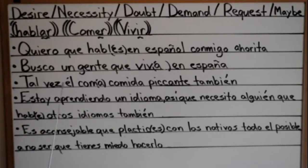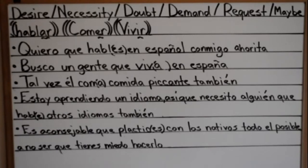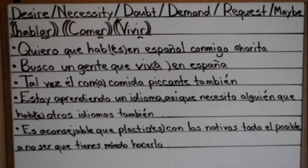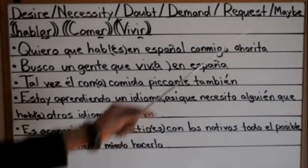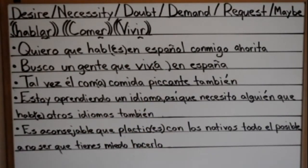'Tal vez él coma comida picante también' — perhaps he eats spicy food as well. Our verb is comer, -er, so we change it to -a, giving 'coma.' It's subjunctive because 'tal vez' means maybe or perhaps — I'm not sure if he eats spicy food. It's not guaranteed, so that's subjunctive.